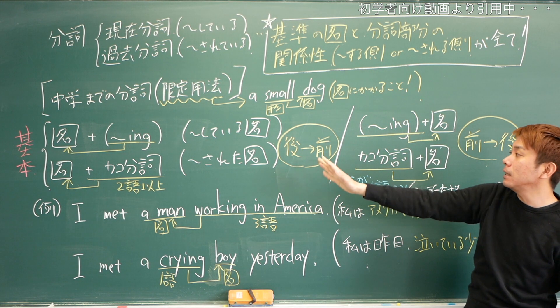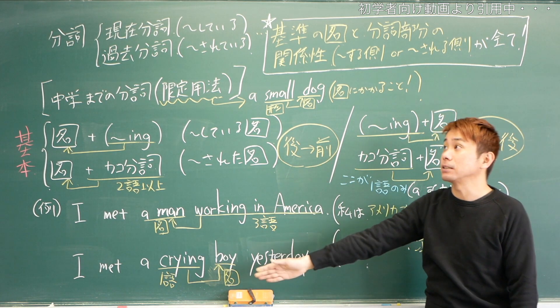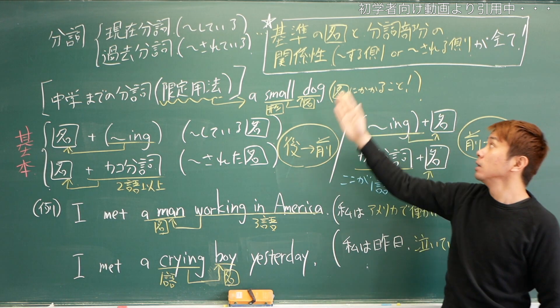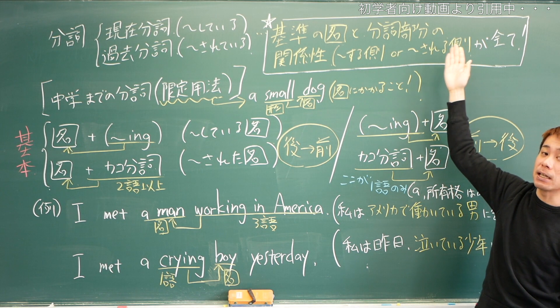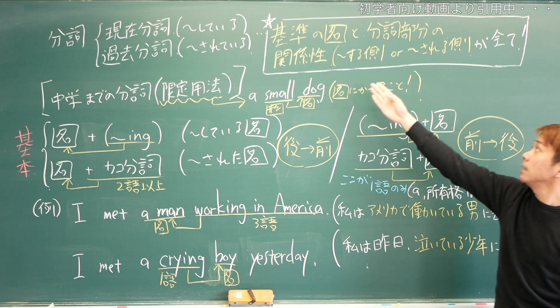基準の名詞ですね。今回ここに書いたのは限定用法でかかる名詞なんですが、そうじゃないのもあります。その基準の名詞と分詞部分、現在分詞か過去分詞か、それの関係性が重要です。